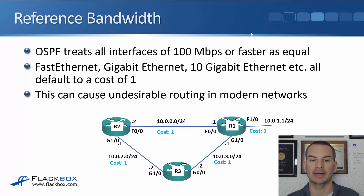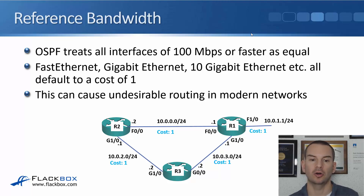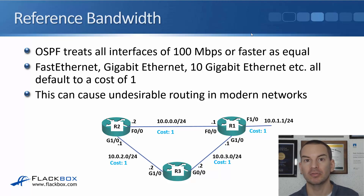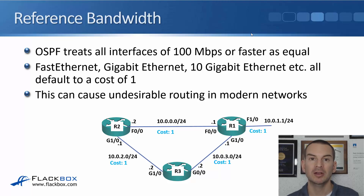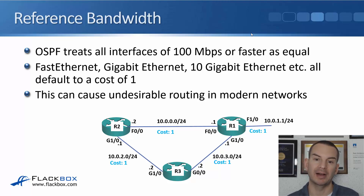Looking at the diagram: the direct link between R1 and R2 on the top path is Fast Ethernet, so with the default reference bandwidth of 100 it gets a cost of 1. On the bottom path via R3, they're Gigabit Ethernet interfaces — faster and higher bandwidth — but they also get a cost of 1 each. So the top path has a total cost of 2 and the bottom path has a cost of 3, meaning the router incorrectly prefers the slower Fast Ethernet top path over the faster Gigabit Ethernet bottom path.